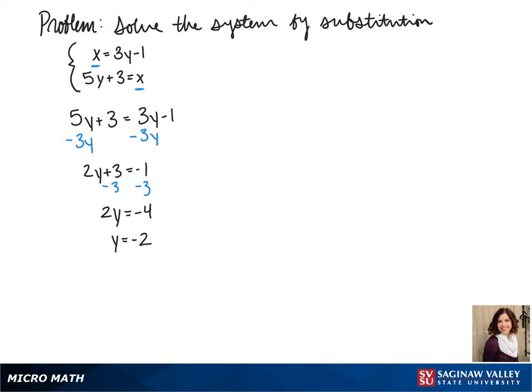We plug that into one of our equations. Both of them are conveniently solved for x, so we get x equals 3 times negative 2 minus 1. So x equals negative 7. So the solution to our system is negative 7, negative 2.